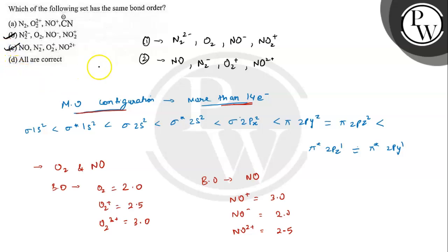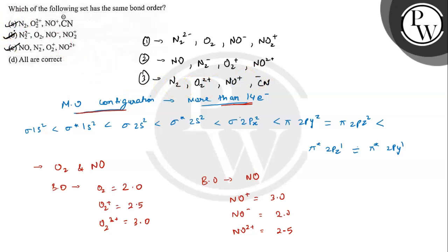The third pair that is matching is N2, O2²⁺, NO⁺, and CN⁻ — all with bond order 3. This is matching with option A. So the correct answer for this question will be option D, that is, all are correct. Hope you have understood it well. Best of luck.